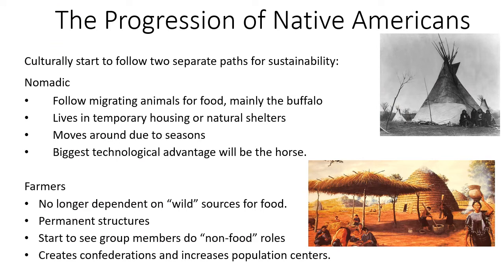Pre-historic Texas started to create new tools to support a sedentary lifestyle centered around farming. Culturally, pre-historic Texas started to follow two separate paths for food sustainability. The first one is nomadic — as the name implies, nomadic people followed the migrating animals for food, which was mainly the buffalo. Nomadic people lived in temporary housing or natural shelters and tended to move around due to seasons, mostly trying to escape the cold and going into warmer regions. The biggest technological advantage for the nomadic people would be the horse. An example of a tribe that successfully did this was the Comanches.